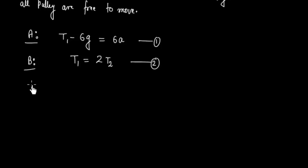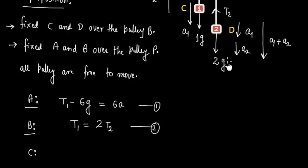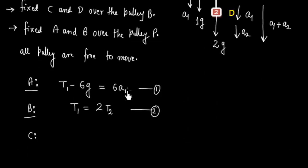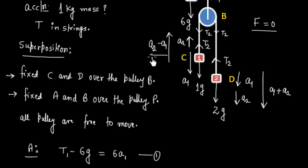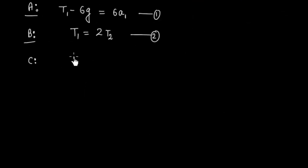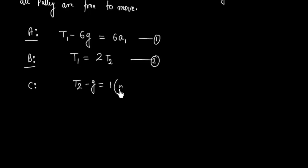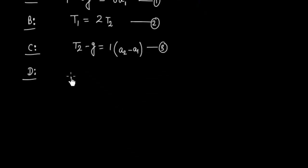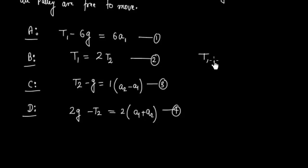For mass A going up: T1 minus 6G equals 6A1. This is equation 1. For mass C going up with resultant acceleration A2 minus A1: T2 minus G equals A2 minus A1. This is equation 3. For mass D coming down with acceleration A1 plus A2: 2G minus T2 equals 2 times (A1 plus A2). This is equation 4. We now have 4 equations and 4 unknowns: T1, T2, A1, and A2.